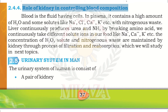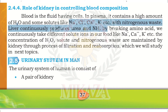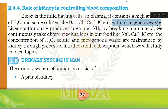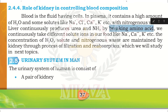Blood plasma contains a high amount of water along with solutes such as sodium ions, chloride ions, calcium ions, and potassium ions. Additionally, nitrogenous waste is also present in blood. The liver continuously produces urea and ammonia, which are dangerous for the body and are produced from the breakdown of amino acids during protein metabolism.